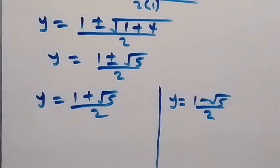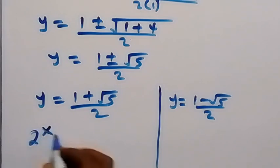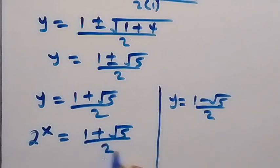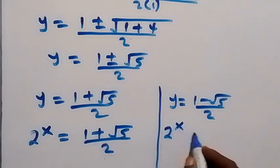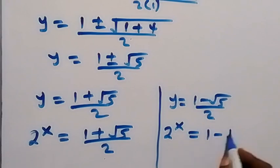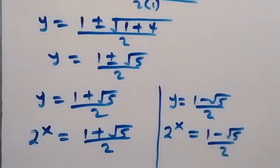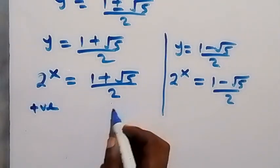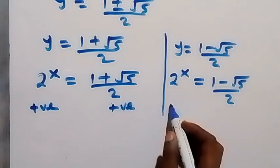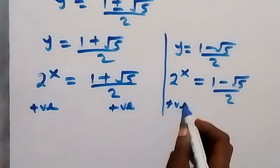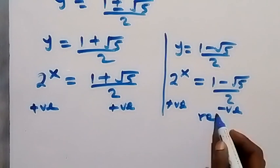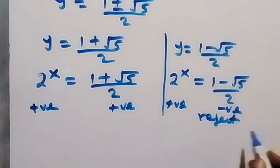We represent y as 2 to the power of x. So we have 2 to the power x equals to 1 plus root 5 over 2, and 2 to the power x equals to 1 minus root 5 over 2. The first solution gives a positive result, but the second gives a negative result, which is not possible here. So we reject this second solution.